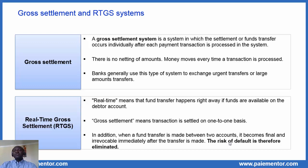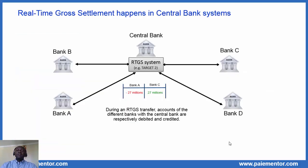An RTGS system is a critical infrastructure in a country's economy. It is operated by the central bank directly or indirectly, and interconnects all the participant banks to facilitate fast transfers of funds among them. Since the central bank plays the function of bank of banks as overseer of the banking system in a country or region, the solvency of banks and the banking system as a whole is a very important topic to the central bank. Everywhere in the world, real-time gross settlement systems are operated by central banks.